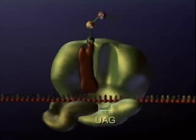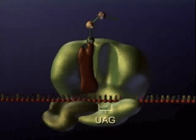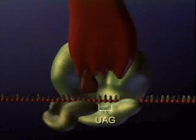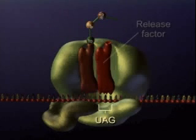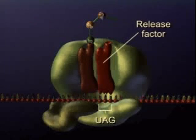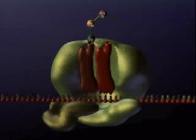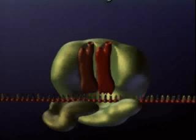This process of polypeptide chain elongation continues until a stop codon is reached. A release factor binds to the A site. It carries no amino acid, but facilitates release of the polypeptide and the messenger RNA from the ribosome.